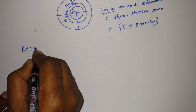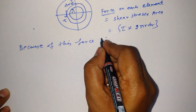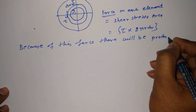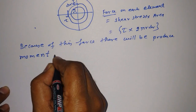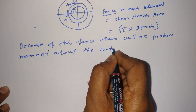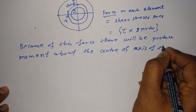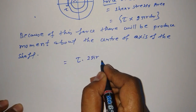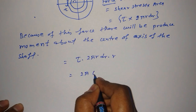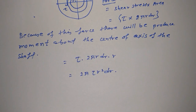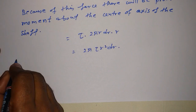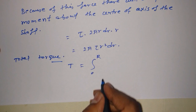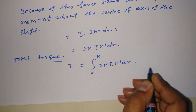Because of this force, there will be a moment produced about the center axis of the shaft. Therefore, the elemental torque is tau·2·pi·r·dr multiplied by r, which gives us 2·pi·tau·r²·dr. Now, we can do integration to find out the total torque. Total torque, denoted by capital T, equals the integral from 0 to R of 2·pi·tau·r²·dr.